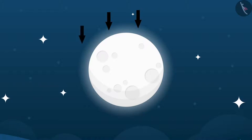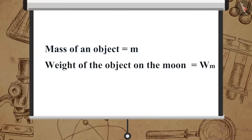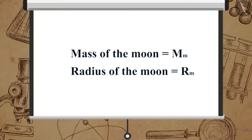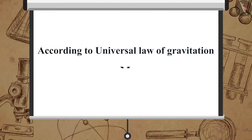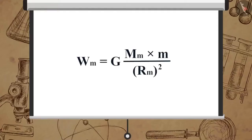Now let us find out what is the force on the Moon. Let the mass of an object be m and let its weight on the Moon be W_m. Let the mass of the Moon be M_m and its radius be R_m. According to the universal law of gravitation, F is equal to G multiplied by M multiplied by m upon r squared. Applying this, the weight of an object on the Moon is W_m equal to G multiplied by M_m multiplied by m upon R_m squared.